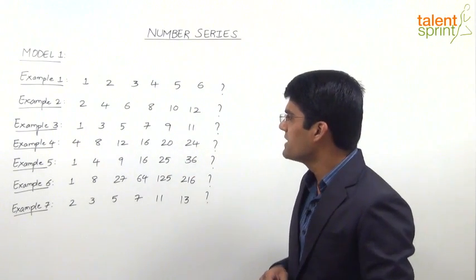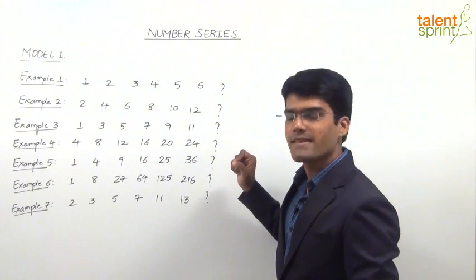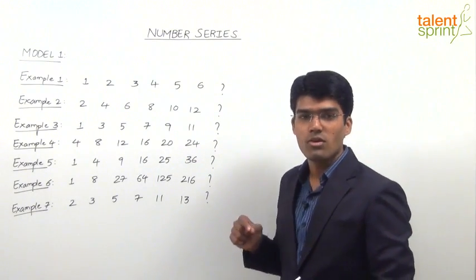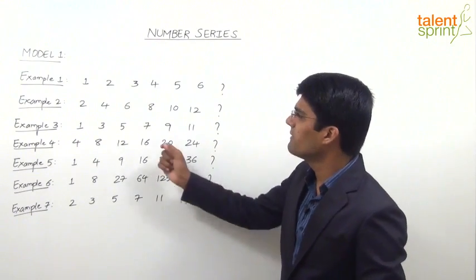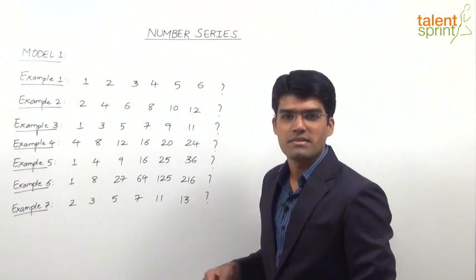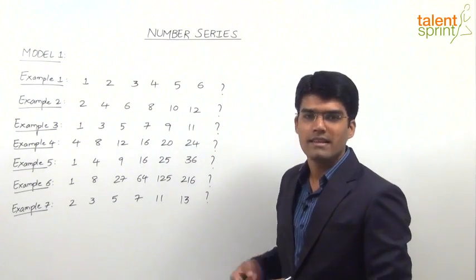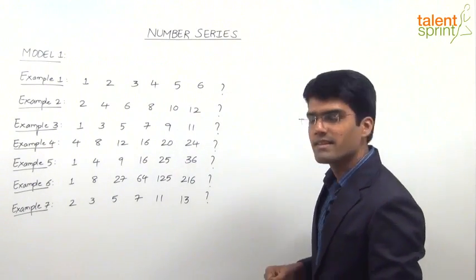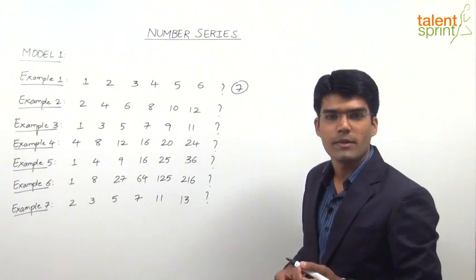The first example is 1, 2, 3, 4, 5, 6, and question mark. We are supposed to find out what comes in place of the question mark. As you can observe, this is a very simple series of natural numbers: 1, 2, 3, 4, 5, 6. So obviously the next number after 6 has to be 7. The answer for question number 1 is 7.